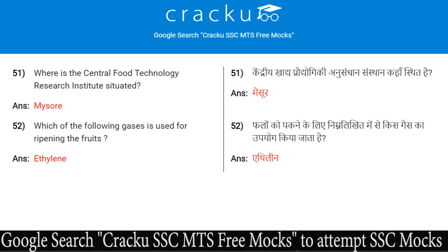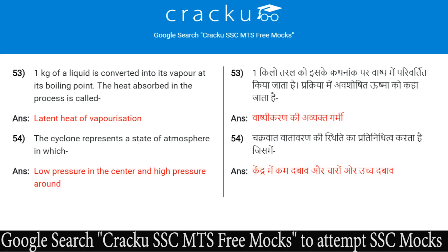Which gas is used for ripening of fruits? The answer is ethylene. When 1 kg of a liquid is converted into its vapour at its boiling point, the heat absorbed in the process is called latent heat of vaporization.